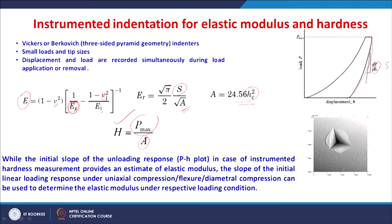For a perfect Berkovich indenter, A equals 24.56 multiplied by hc squared, where hc is the contact displacement. Knowing the maximum load applied divided by this area gives hardness as well. By instrumented indentation, both elastic modulus and hardness can be measured. The slope of the initial linear loading response under uniaxial compression, flexural, or diametral compression can also be used to determine the elastic modulus under respective loading conditions.